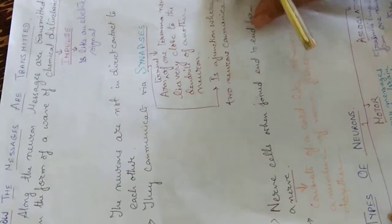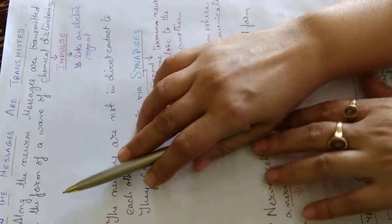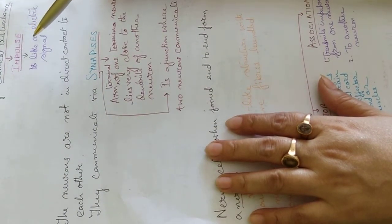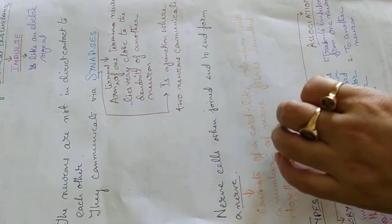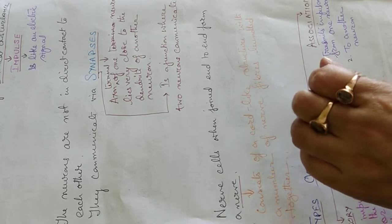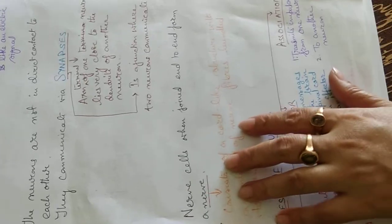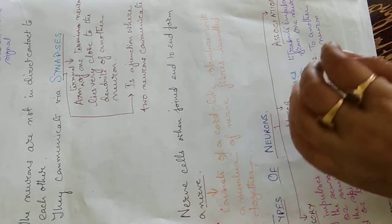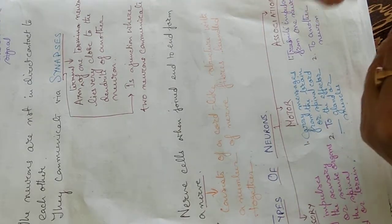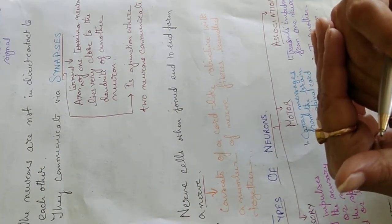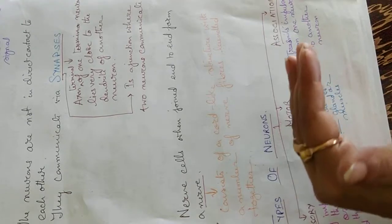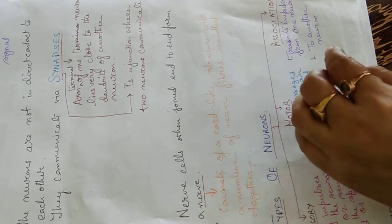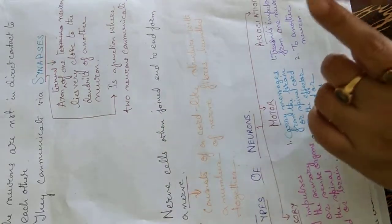How are messages transmitted? Along the neuron, messages are transmitted in the form of a wave of chemical disturbances — that is, an electric signal known as an impulse. The neurons are not in direct contact with each other; they communicate via synapses. A synapse is a gap between the axon terminal of one neuron and the dendrite of another neuron — it is a junction where two neurons communicate.